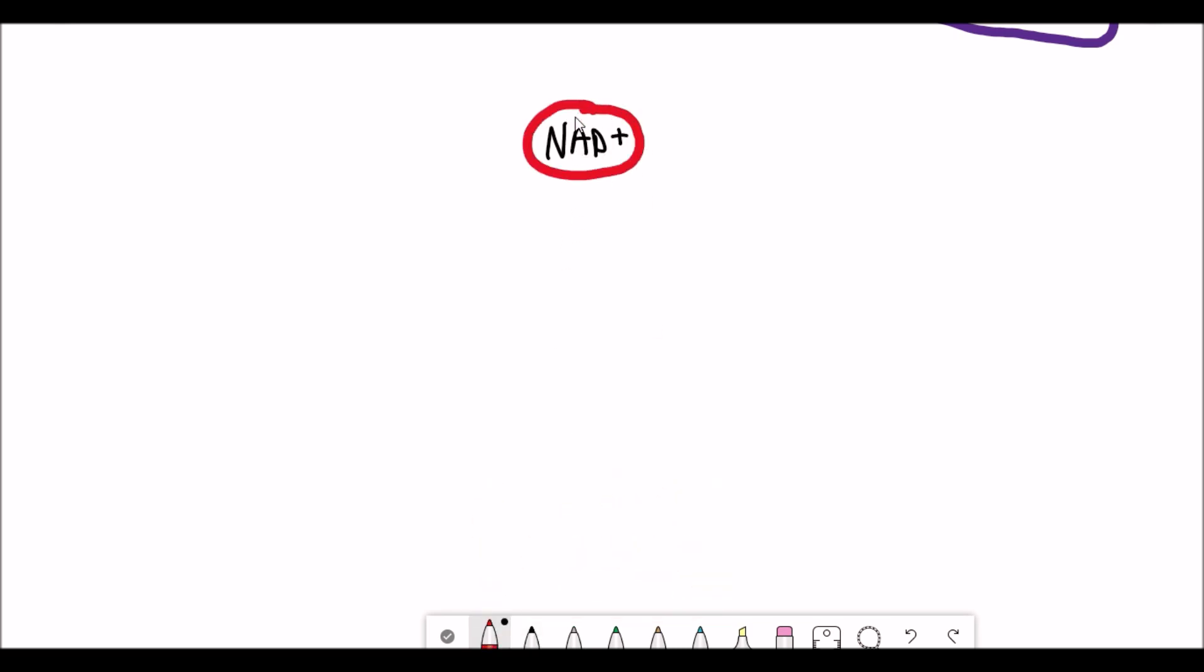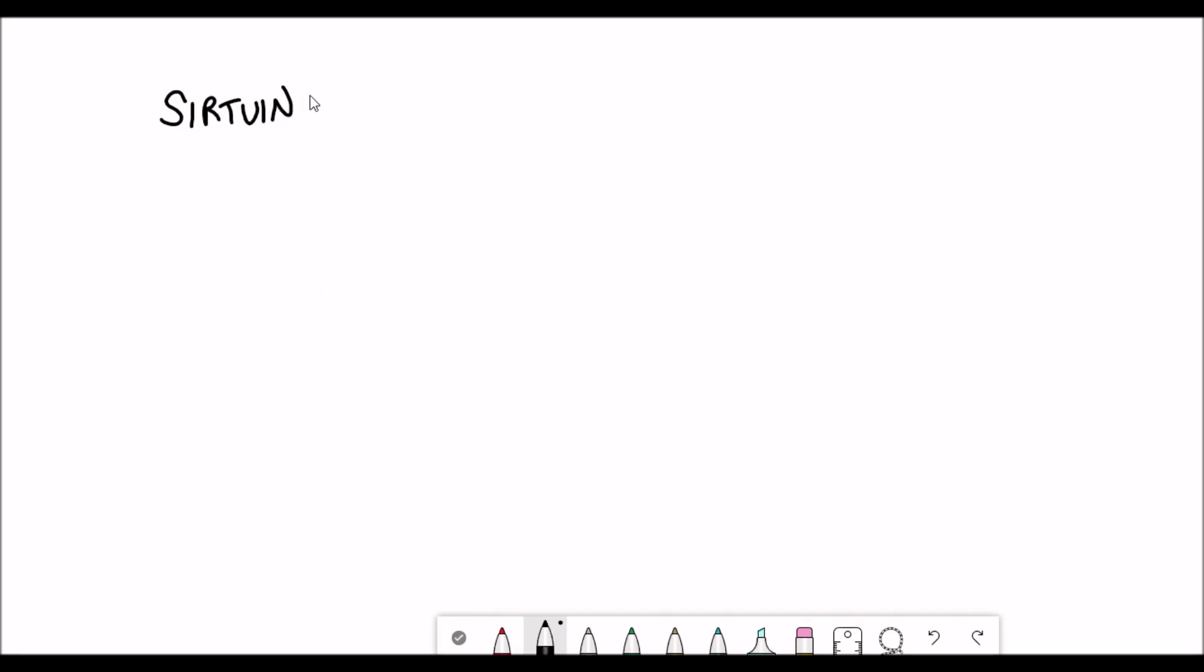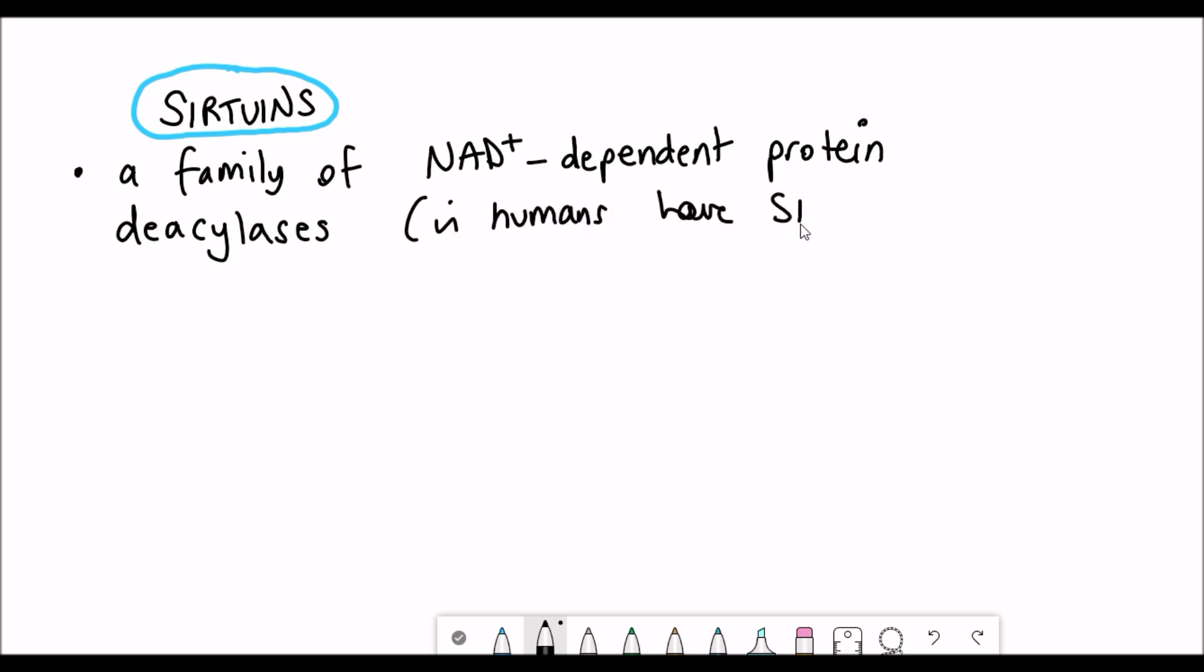So now you might be wondering, what are SIRTUINs? I don't actually know how you're meant to pronounce it. SIRTUINs are a family, which is nice. And they are a family of NAD plus dependent deacetylases. And I'll show you what that means in a second. In humans, we have seven SIRTUINs, SIRT1 to SIRT7. And they have a variety of different protein targets and functions.